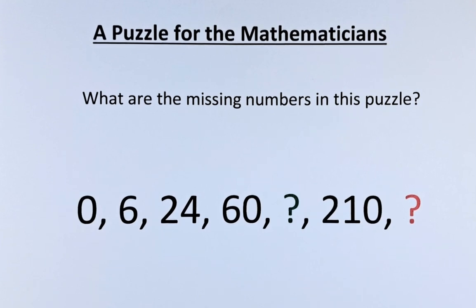Welcome back to the solution of a puzzle for the mathematician. The numbers in the puzzle are 0, 6, 24, 60, the green question mark, 210 and the red question mark. Have you managed to solve the two missing numbers in this puzzle? If you have, well done. If you have not, this is the solution to this puzzle.